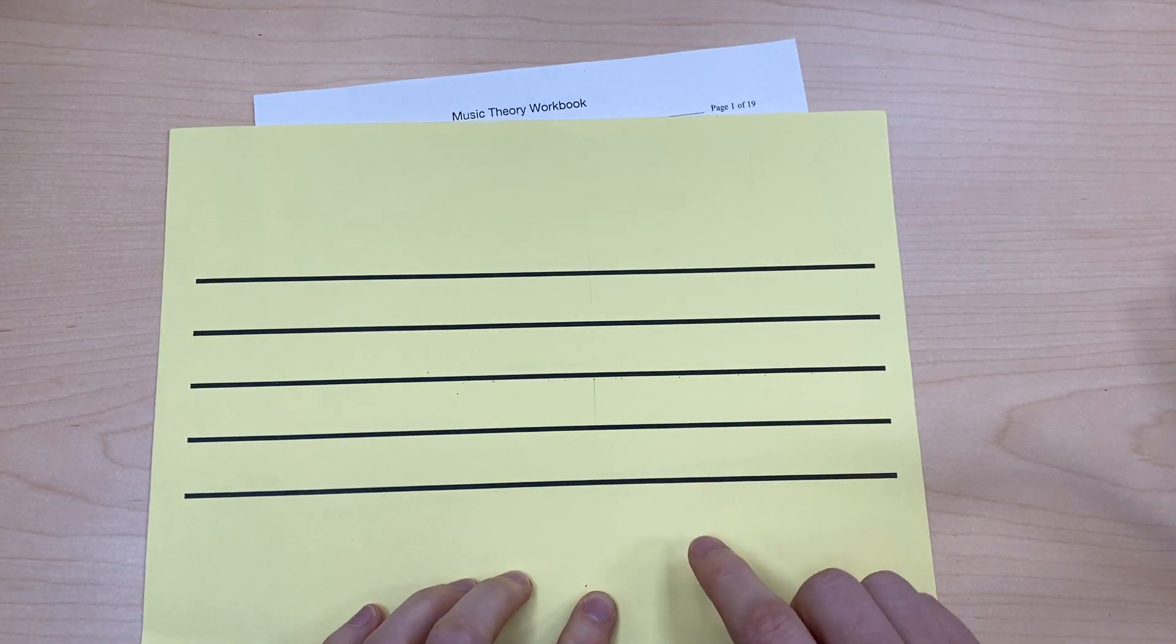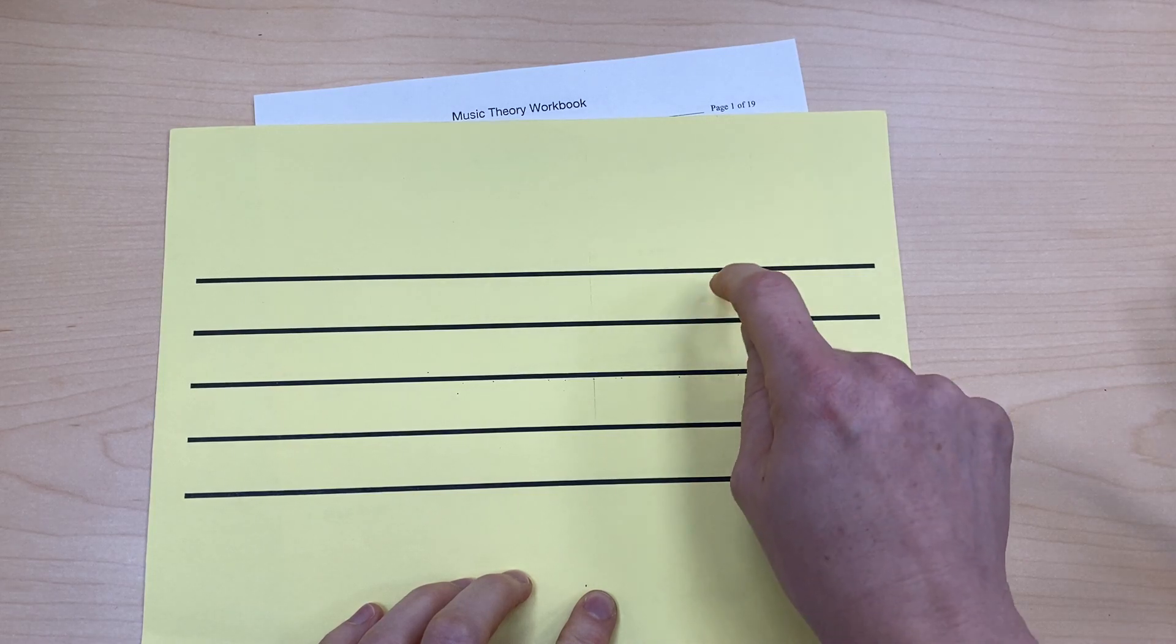And four spaces. We also count those from the bottom up: one, two, three, four.